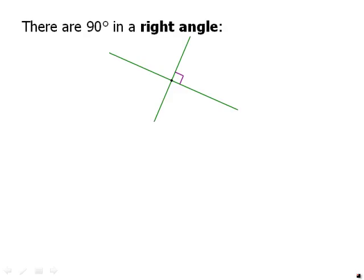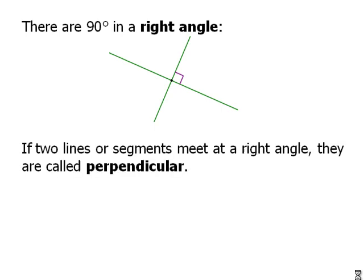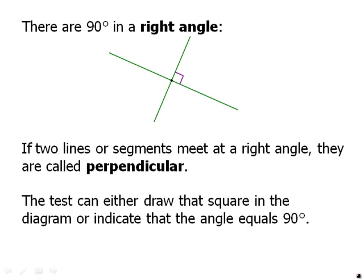There are 90 degrees in a right angle. So here we have two lines intersecting at right angles. There are actually four right angles at that intersection. If the two lines or segments meet at right angles, they are called perpendicular. And that is a term you should know. The test can either draw that little square, the perpendicular sign, which is that little square, or it can indicate that the angle is 90 degrees. It could label 90 degrees in the diagram or have X degrees and tell us in the text that X equals 90. So there are a variety of ways that they can tell us that it's a 90 degree angle.